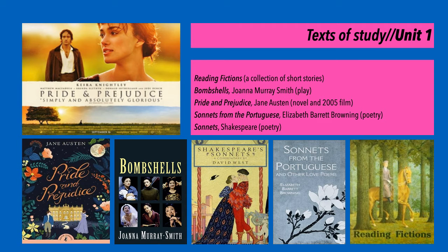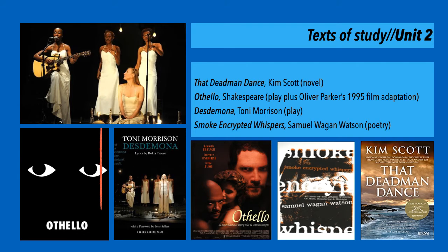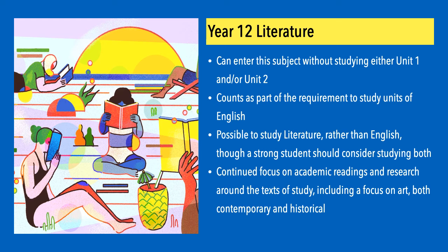Unit 1 commences with an introduction to literary theory through the examination of short stories, the novel Pride and Prejudice and the film adaptation, a play and sonnets. In Unit 2 you have the opportunity to examine the treatment of gender and race in a number of texts including artworks, poetry and theatre productions.